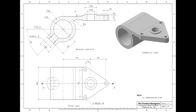Welcome back to the new part modeling tutorial. This is our XSI number 38 triangular mount bracket. Please take a screenshot of this drawing. We'll move to Catia.